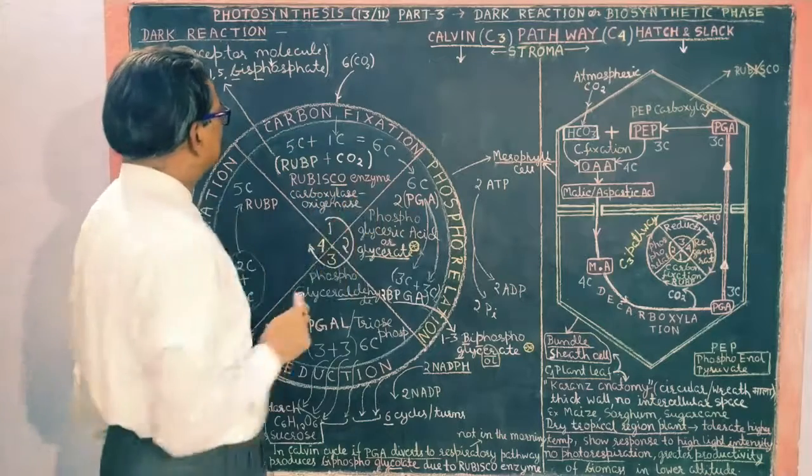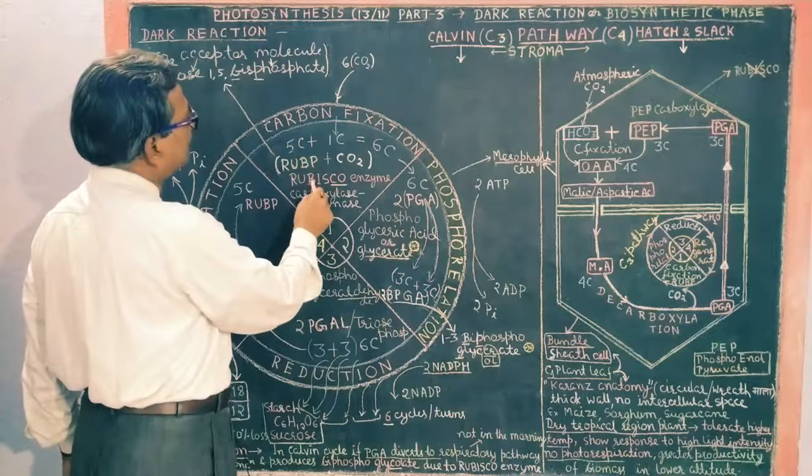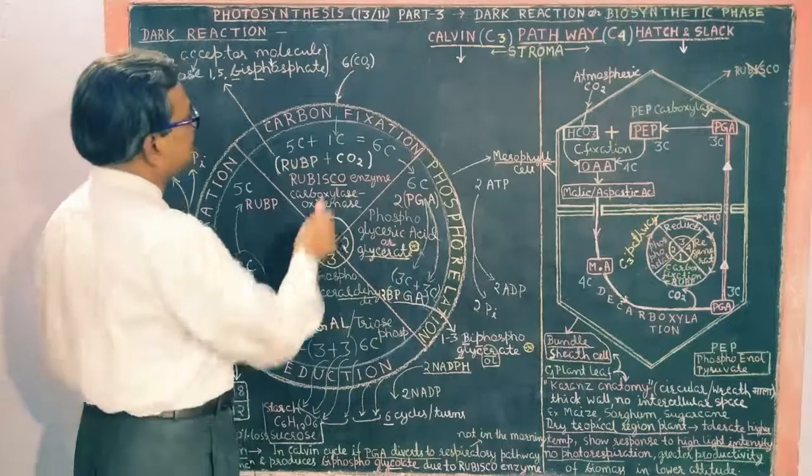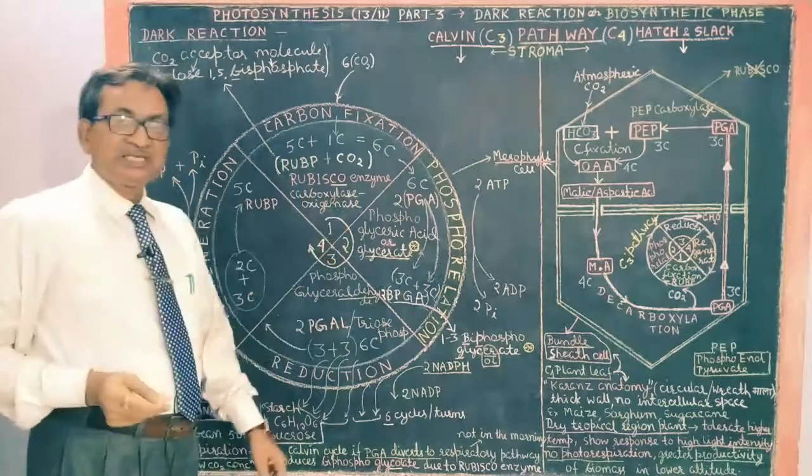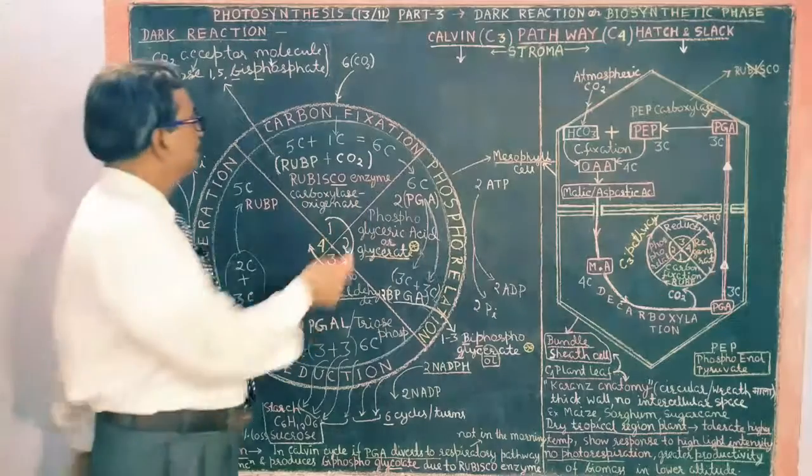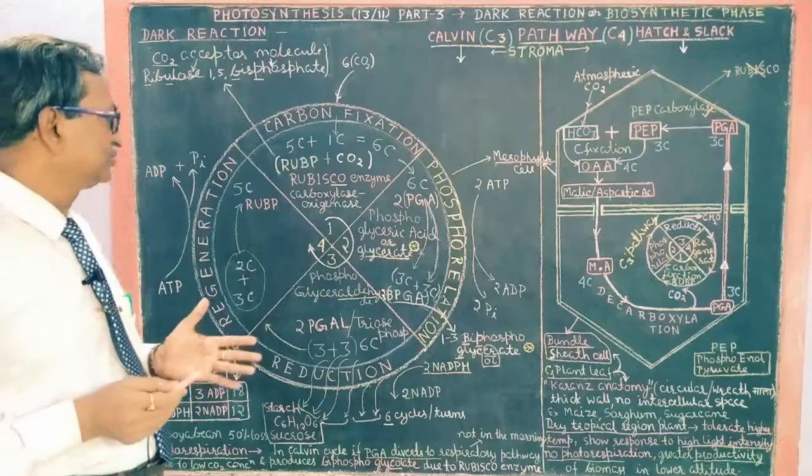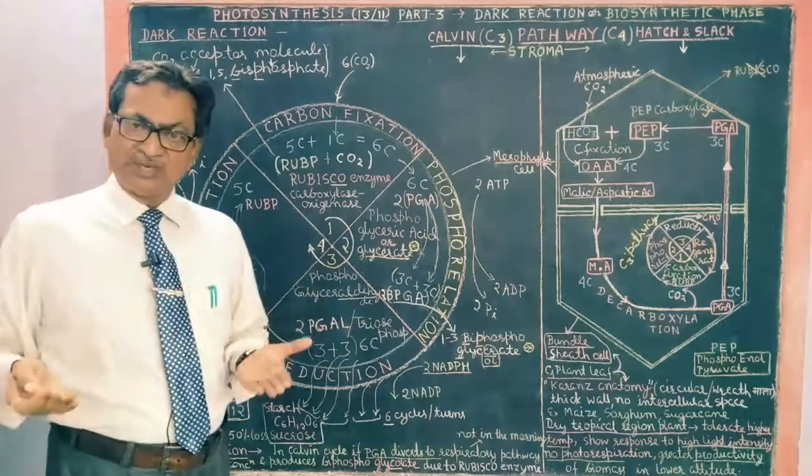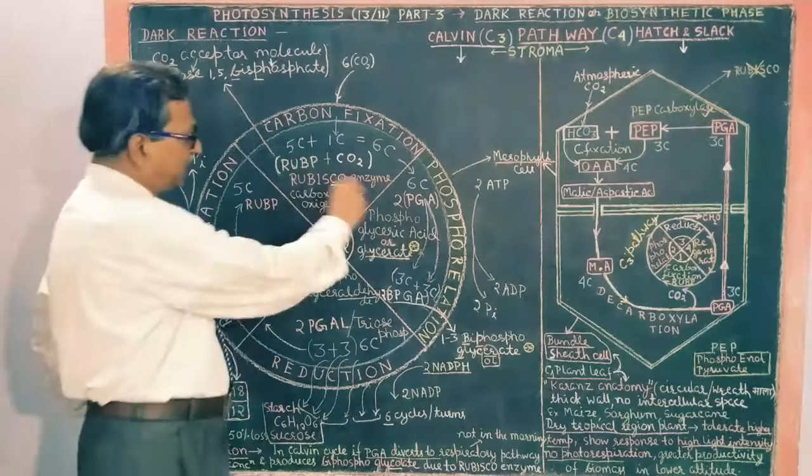So here the enzyme works, that is rubisco enzyme. Rubisco full form, R-U-B-I-S-C-O. C stands for carboxylation and O stands for oxygenation. This means this enzyme does both carboxylation and oxygenation, the addition of carbon and oxygen depending upon the situation.